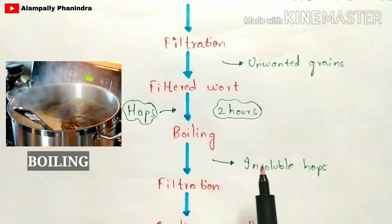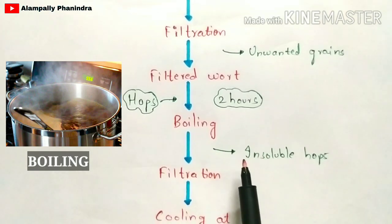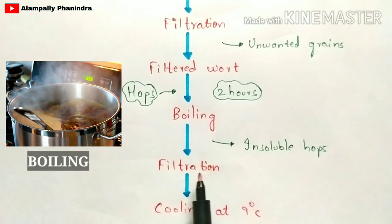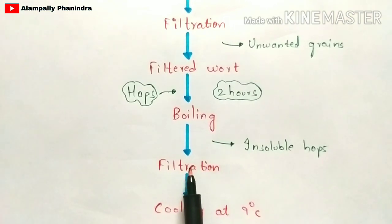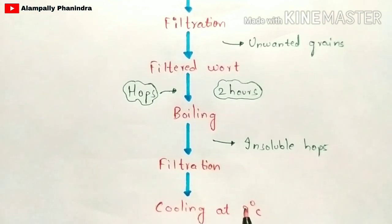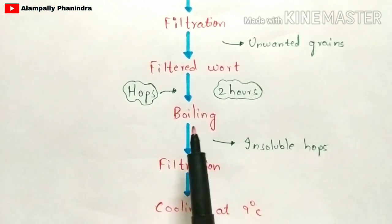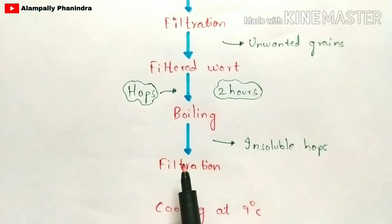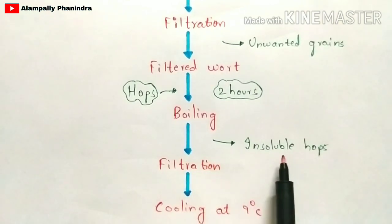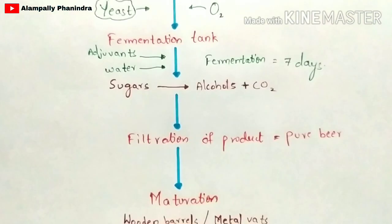After removing the insoluble hops, the product obtained is then cooled down to nine degrees Celsius using refrigerators.